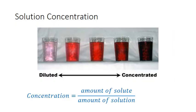Solutions can have variable composition — a solution may contain a lot of solute, or just a little. To describe a solution well, you must define both the identity of the solute and solvent, as well as the relative proportions. Terms like dilute and concentrated allow us to describe relative amounts qualitatively, but concentrations allow a much more precise definition. A concentration is simply a mathematical expression of the amount of solute in a given amount of solution.